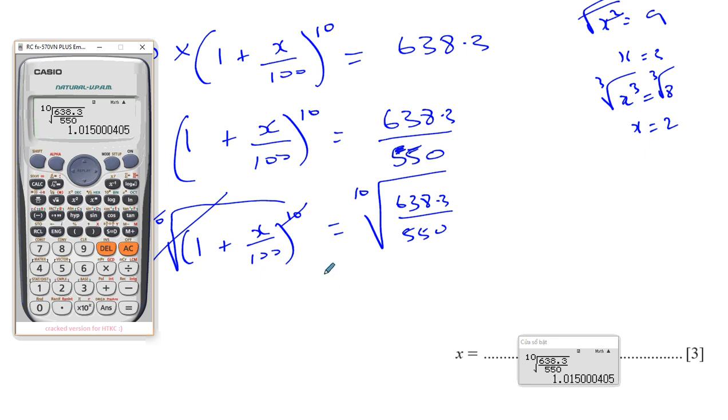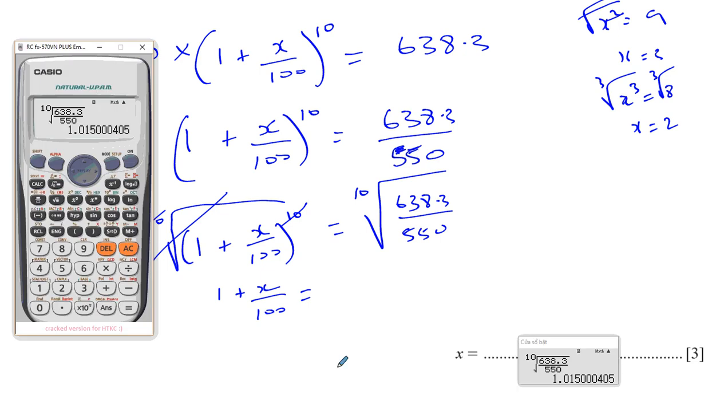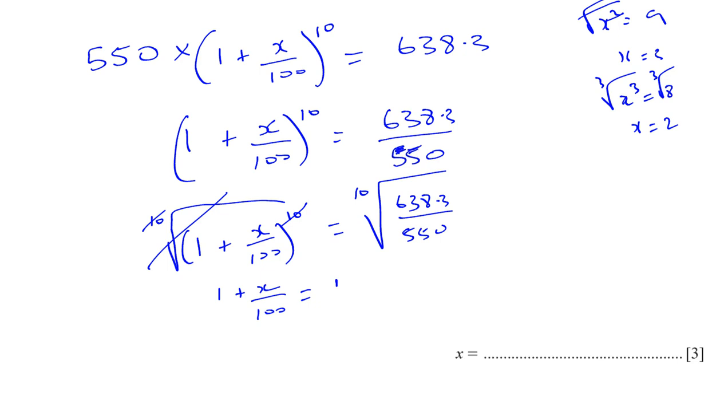When I work that out, it'll give me 1.015000. So, I know now that on this side, I've got 1 plus X over 100 is equal to 1.015 and then some zeros. Now, I have got to find X. So, I've got to get rid of this one. So, I'm going to take one from both sides. So, I'll have X over 100. I'm just subtracting one from there. X over 100 is equal to 1.015 minus 1, which gives me 0.015000.